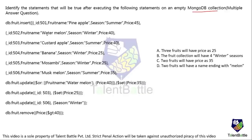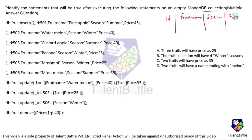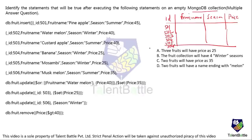The second record is 502, watermelon, winter, price 40. Third is 503, custard apple, summer, price 40. Fourth is 504, banana, winter, price 25. So the schema has columns: ID, fruit name, season, and price. Due to the insert statements we get records 501 through 506 with their respective fruit name, season, and price values.